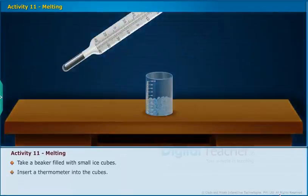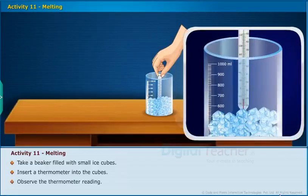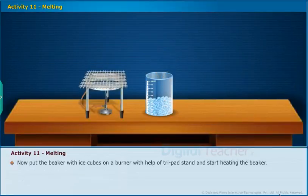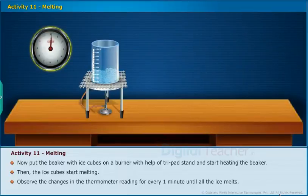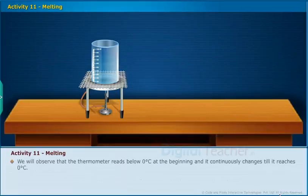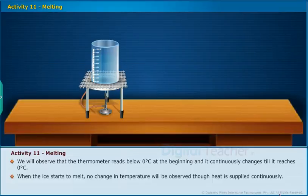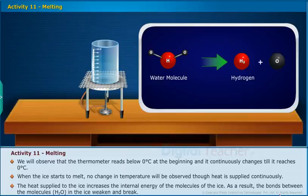Let us perform an activity for melting. Take a beaker filled with small ice cubes, insert a thermometer into the cubes and observe the thermometer reading. Put the beaker on a burner with a tripod stand and start heating. The ice cubes start melting — observe the changes in the thermometer reading every one minute until all the ice melts. We observe that the thermometer reads below zero degrees Celsius at the beginning and changes continuously until it reaches zero degrees Celsius. When ice starts to melt, no change in temperature is observed even though heat is supplied continuously. The heat supplied increases the internal energy of the molecules, weakening and breaking the bonds between the H₂O molecules in the ice.